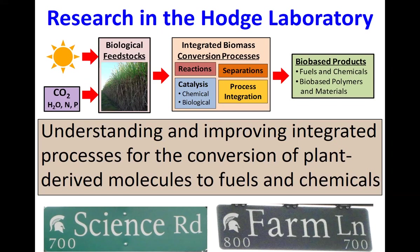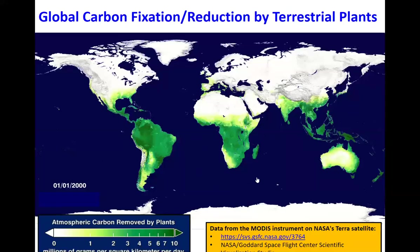My lab at Michigan State was right at the corner of Science Road and Farm Lane, which I thought was a great analogy for what we do — fundamental research science combined with applied agriculture. This animation is actually from NASA, and possibly produced by a group at the University of Montana. It shows carbon fixation by terrestrial plants.